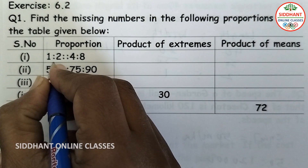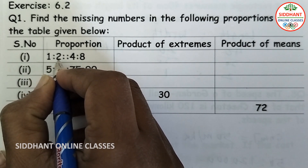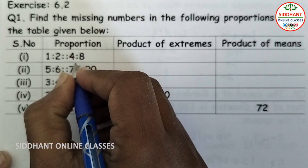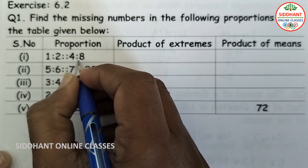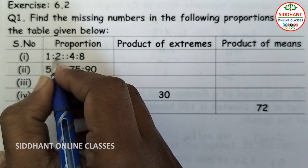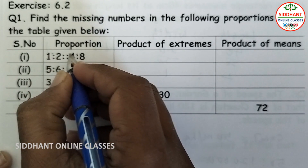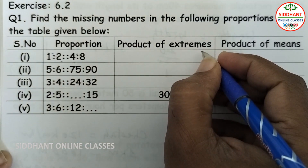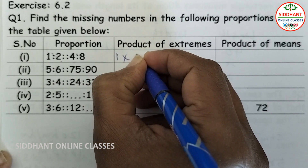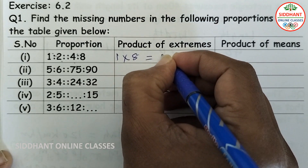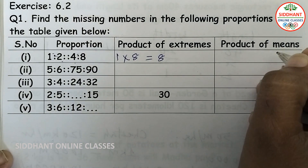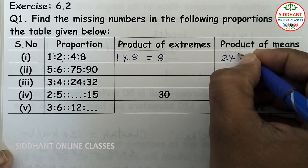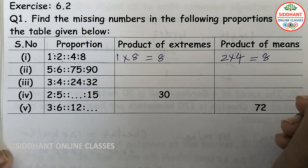The first proportion is 1 is to 2 and 4 is to 8. We are going to find out the product of extremes and means. The extremes are 1 and 8, so 1 into 8 equals 8. The means are 2 and 4, so 2 into 4 also equals 8.